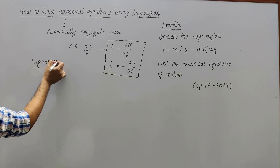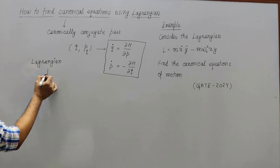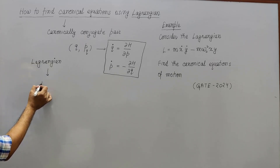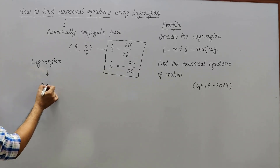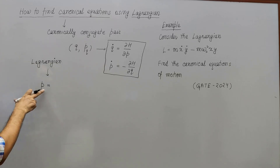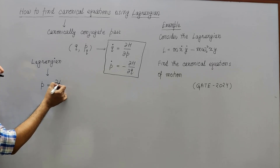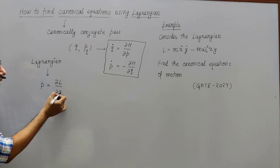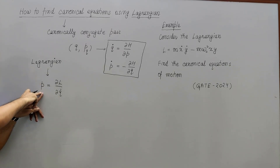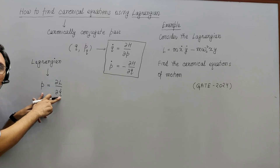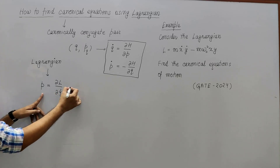If the Lagrangian is given, we use the simple concept: the generalized momentum corresponding to a generalized coordinate q is p = ∂L/∂q̇. We are going to use this equation first.